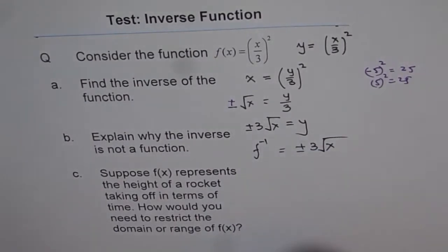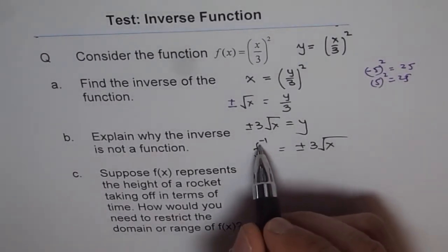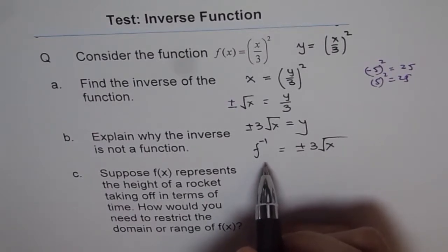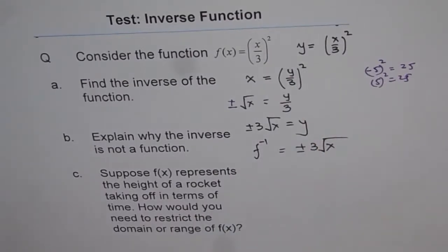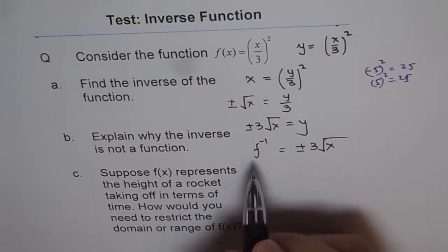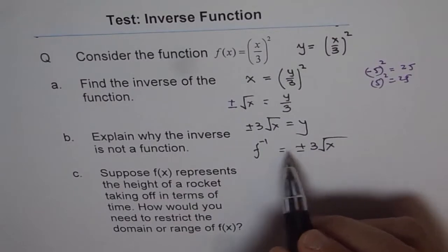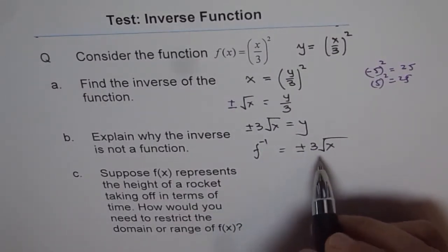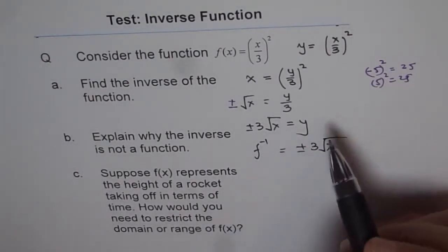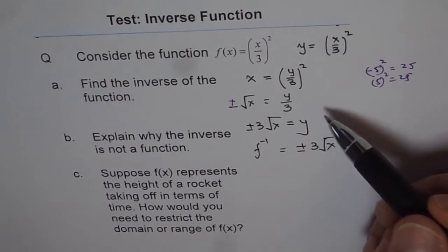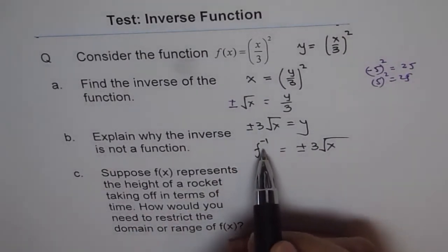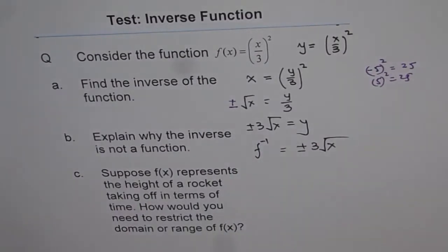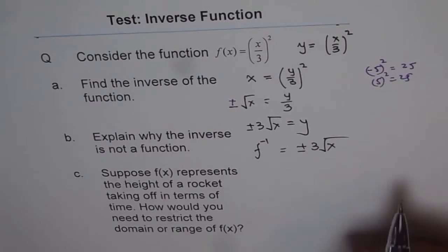Here we can commit a third mistake: writing f⁻¹(x) with x in brackets. Some teachers forgive you for that, but you know this is not a function — we are saying inverse of our function, not inverse function. These are two different things. Writing x makes it wrong since it is not a function; for most values of x except 0, we have two values. So don't write x here. We have pointed out three mistakes: not writing ±, writing 3 ± √x incorrectly, and writing this as f⁻¹(x).